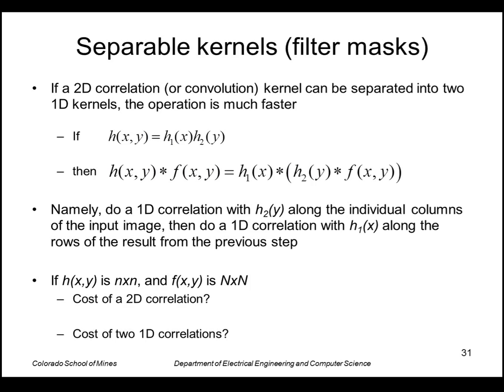Another point that's useful for implementation purposes is that of separable filters. So if we can take our mask and write it as a product of two functions, one just of x, the other just of y, then the convolution can be split up this way as a convolution of the h_y function with the image, followed by the convolution of the other function with the image. Namely, we do two 1D correlations or convolutions instead of a single 2D convolution.